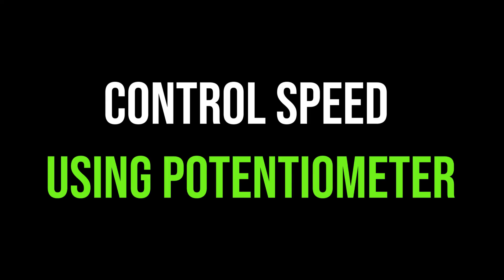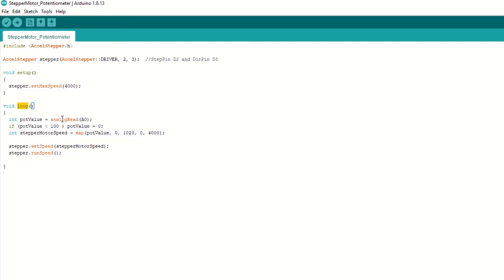Now let's take a look at code to control the speed of motor using potentiometer. Inside loop function, read the potentiometer value using analogRead function. Map this value from 0 to 4000 steps. This will be our speed. Now set the speed and call runSpeed function.